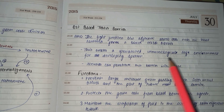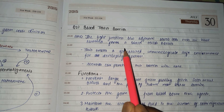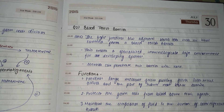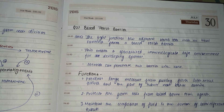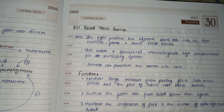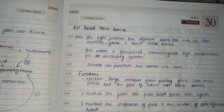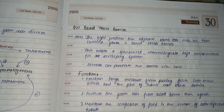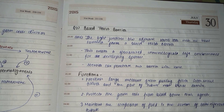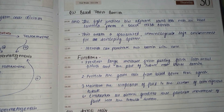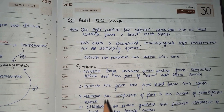Keep in mind why we need an immunologically safe environment for developing sperm. The sperm cells are not recognized by the body as its own cells because they undergo certain differentiation. If they come into contact with blood, antigens might be produced against them and antibodies may ultimately destroy them. So the barrier is required for this reason.